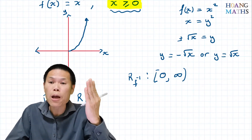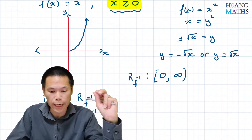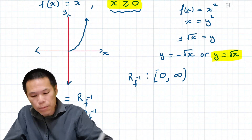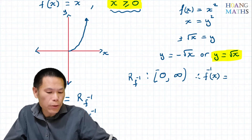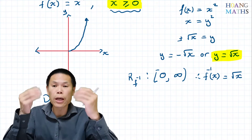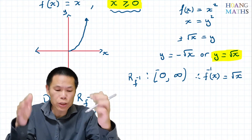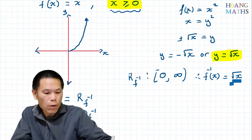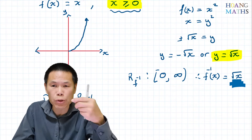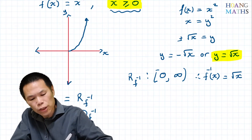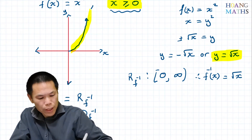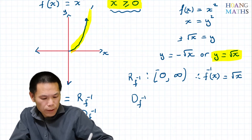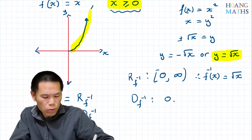The inverse function must be positive — from zero onward — so the correct answer is the positive square root. Therefore, f inverse of x equals square root of x. The domain of the inverse function is also from zero to infinity, written as [0, ∞), where the square bracket means inclusive and the round bracket means excluding.